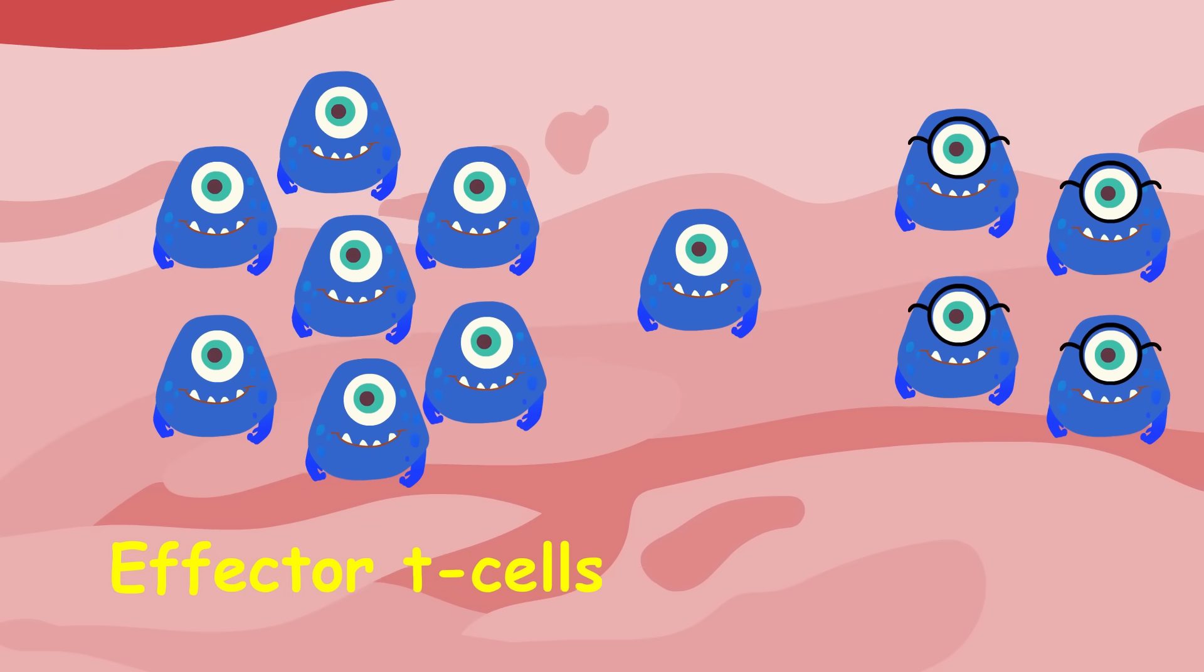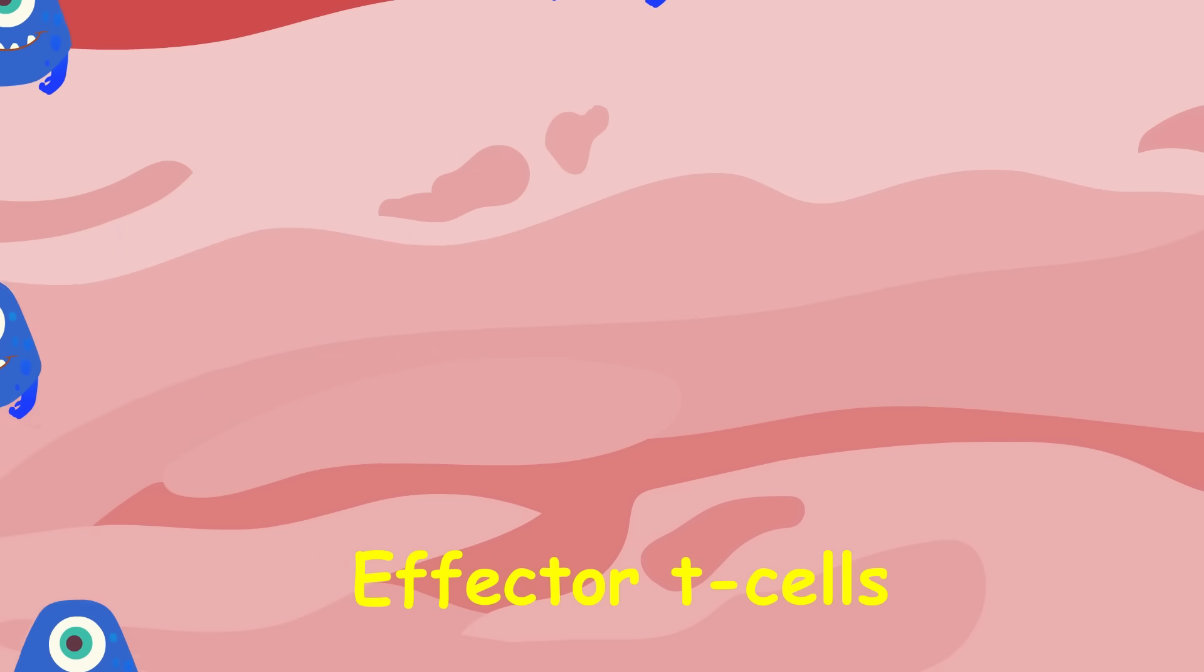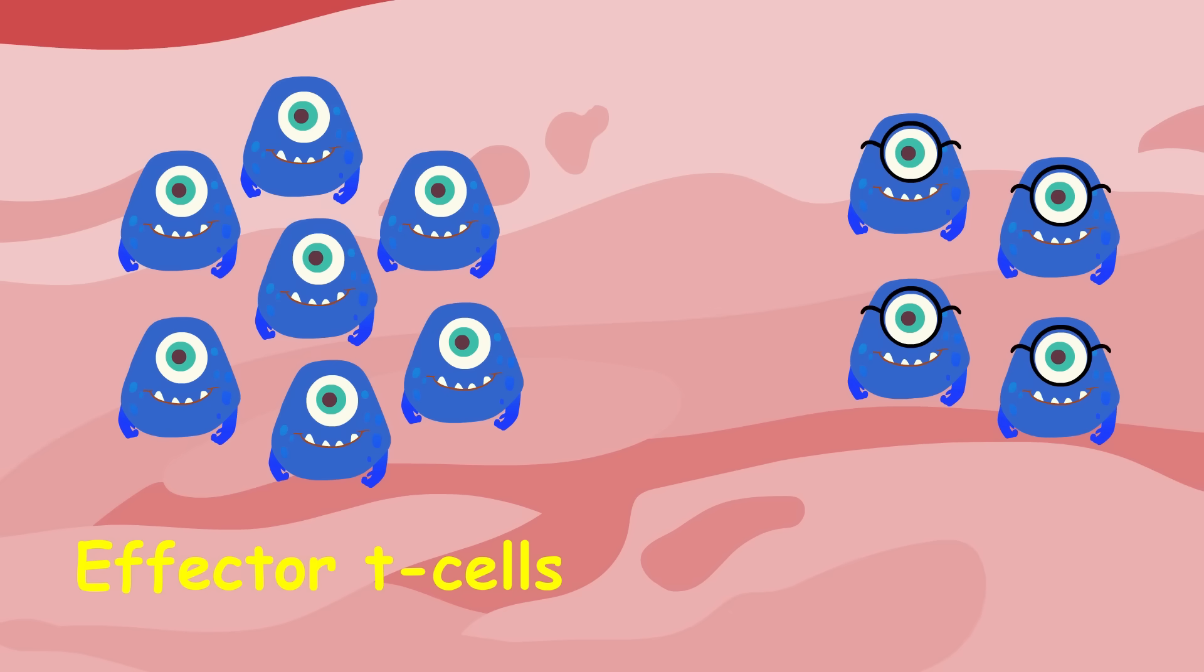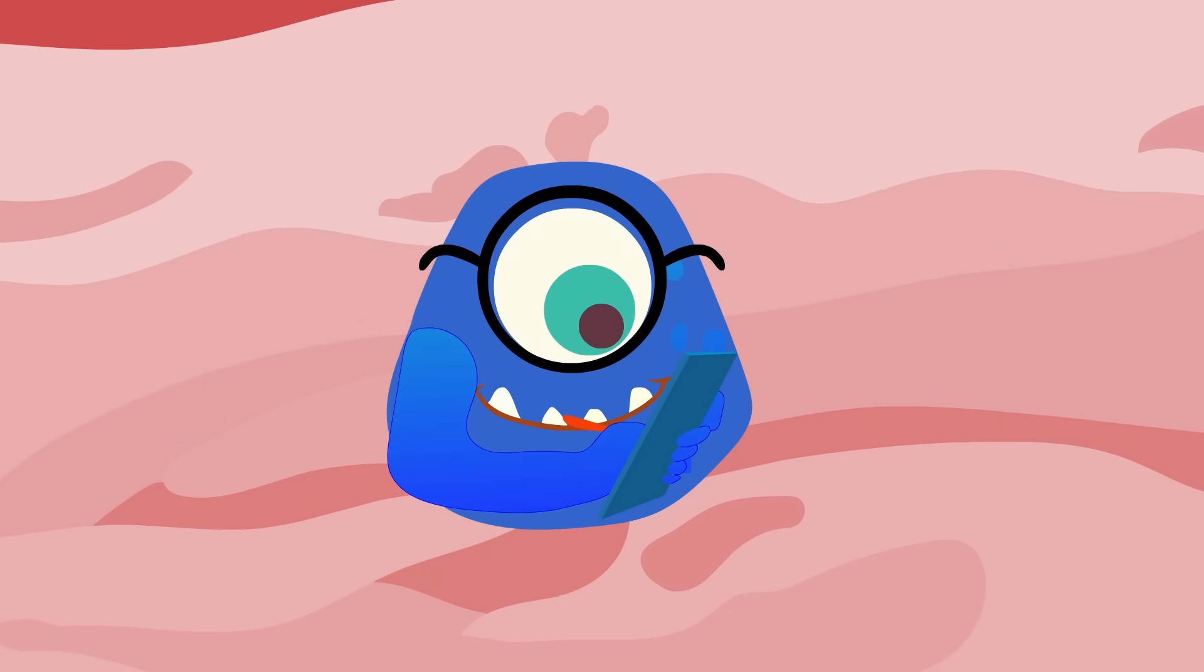forming effector T-cells, which are basically cells that cycle through the body and call in the cavalry, namely other white blood cells. Helper T-cells also form memory T-cells, which keep a record of this antigen for future reference.